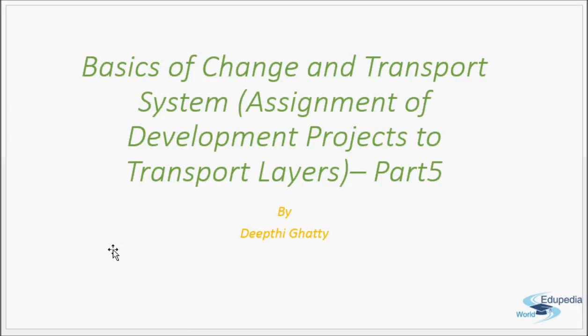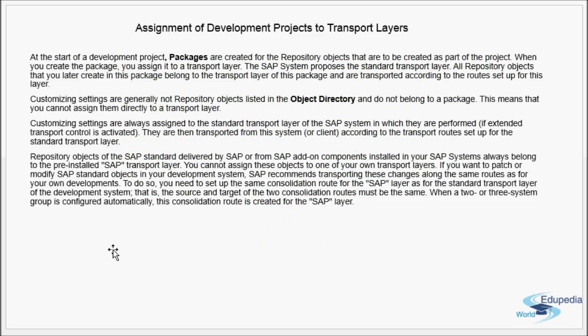Hello everyone, thank you for watching Edupedia World videos. In this part five of our basics of Change and Transport System, we are going to learn about assignment of development projects to transport layers. In the last video we learned that we have two types of routes: the consolidation route, which goes from development to QA, and the delivery route, which goes from QA to production.